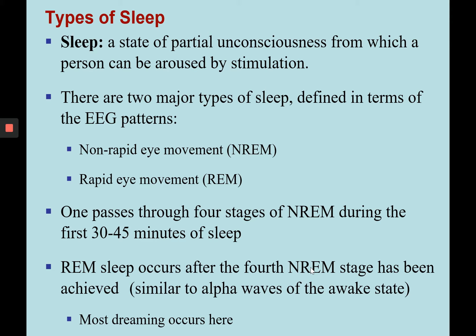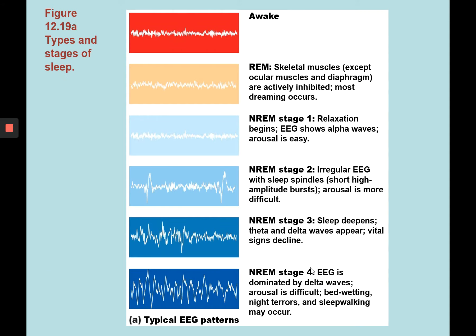Stages 1, 2, 3, and 4 of non-REM occur before REM sleep, which occurs after the fourth non-REM stage has been achieved. During REM sleep, we see brainwaves similar to alpha waves of the awake state, and that's why most dreaming occurs here. But we don't act on those dreams because during REM sleep, skeletal muscles are inhibited — the only ones not inhibited are those that move the eyes.